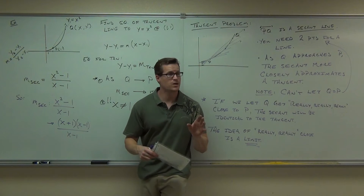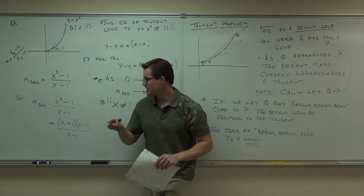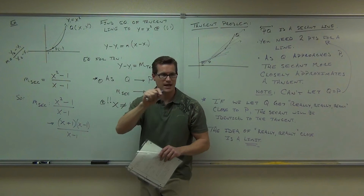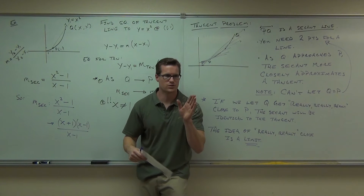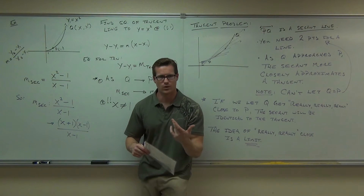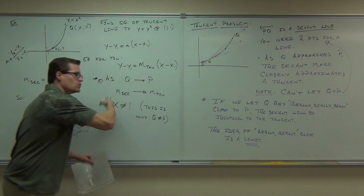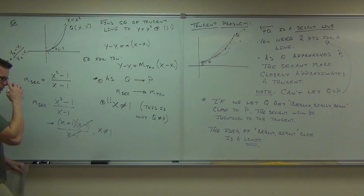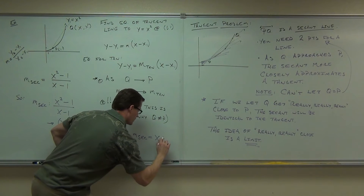The answer is yes and no. It would be a problem normally. However, watch carefully — are we actually letting x equal 1? Is q actually getting to the point p? No. So is x actually equaling 1? No. We're getting really, really close — like 1.0000 forever and then a little bitty 1 at the very end. Really close, but it's never actually equaling 1. So keep in mind, when we do this, we're not getting rid of any domain — we're not actually altering the domain at all because we already knew x wasn't equal to 1. So the slope of the secant now equals x plus 1.